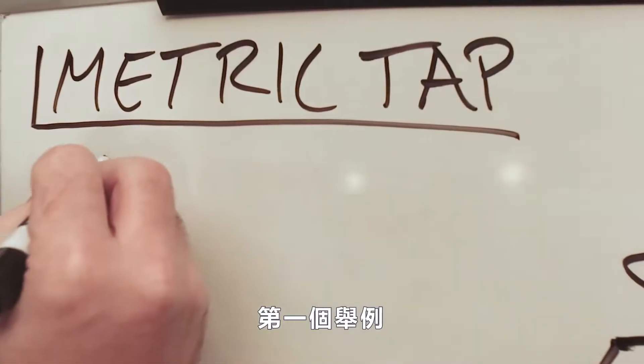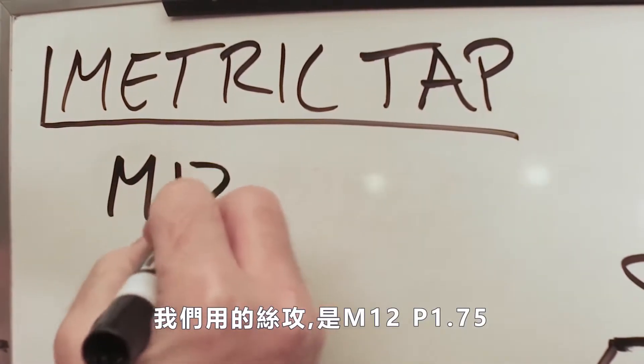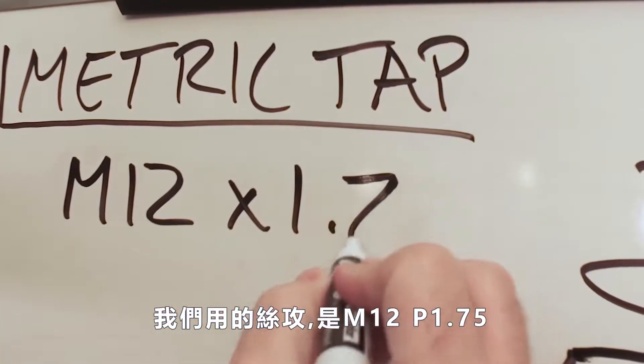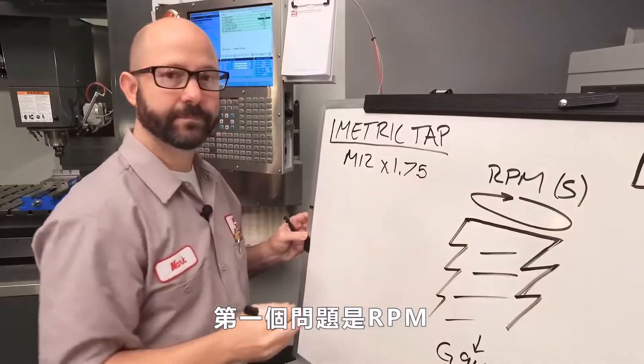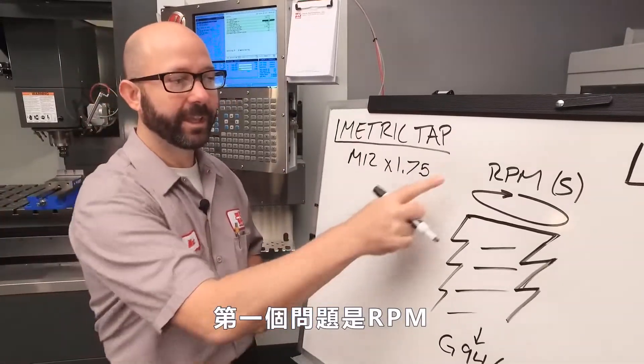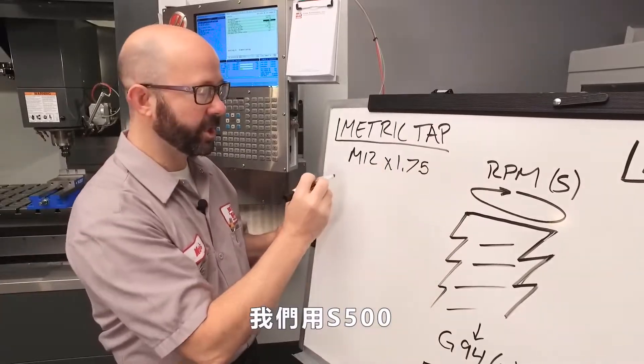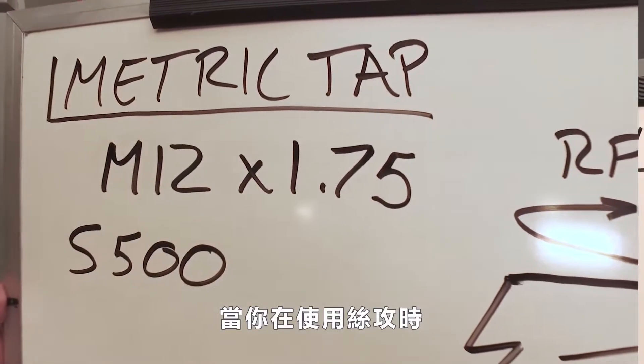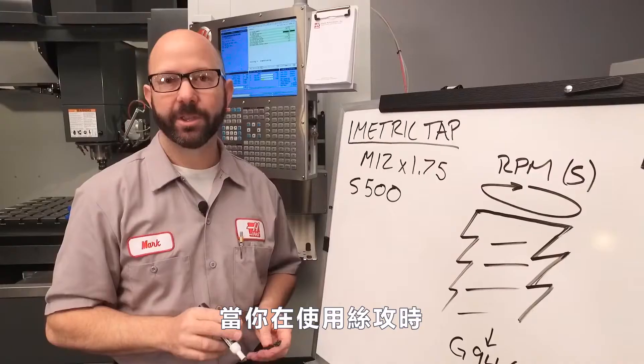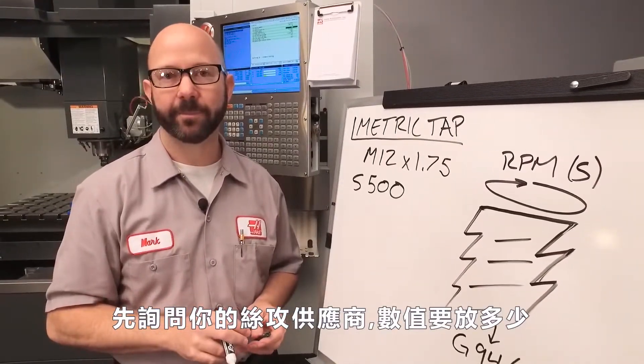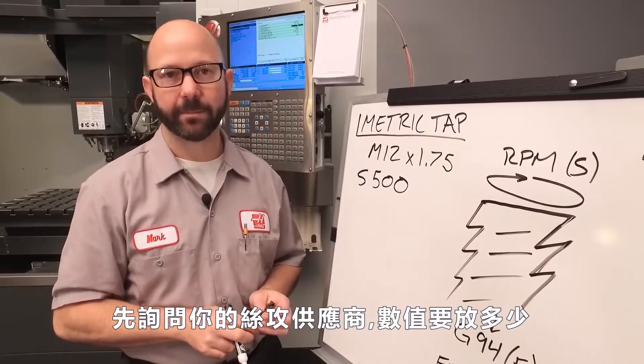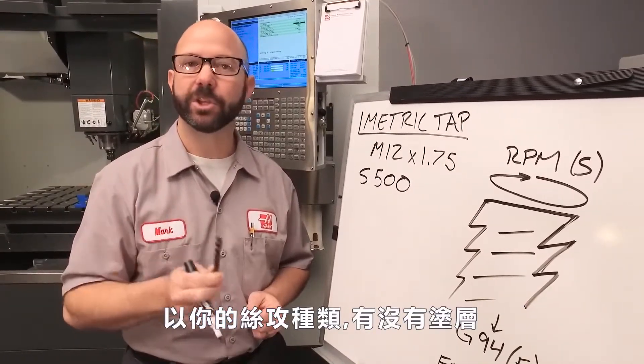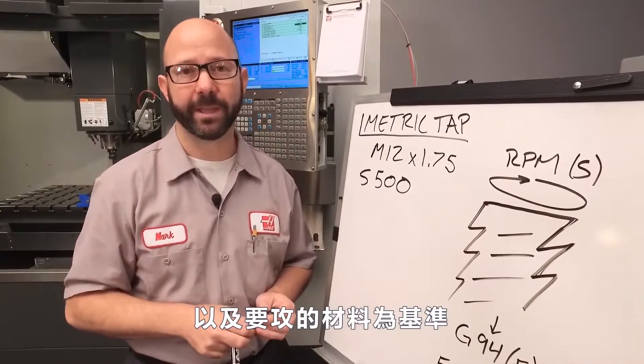Now for this first example, we're going to use an M12 by 1.75 tap. The first piece of our puzzle is our RPM. We're going to use S500. Now for your real tap, you need to contact your tap supplier to find out what speed they recommend based on your tap style, the coating on your tap, and the material being cut.